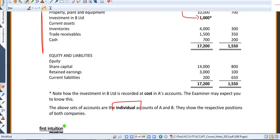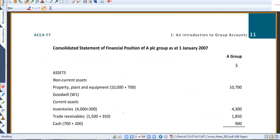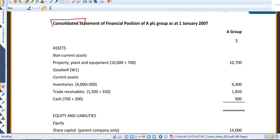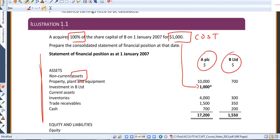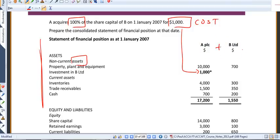Notice that these are the individual sets of accounts of A and B. So if we're going to prepare the consolidated accounts, I want you to at least initially imagine a spreadsheet.